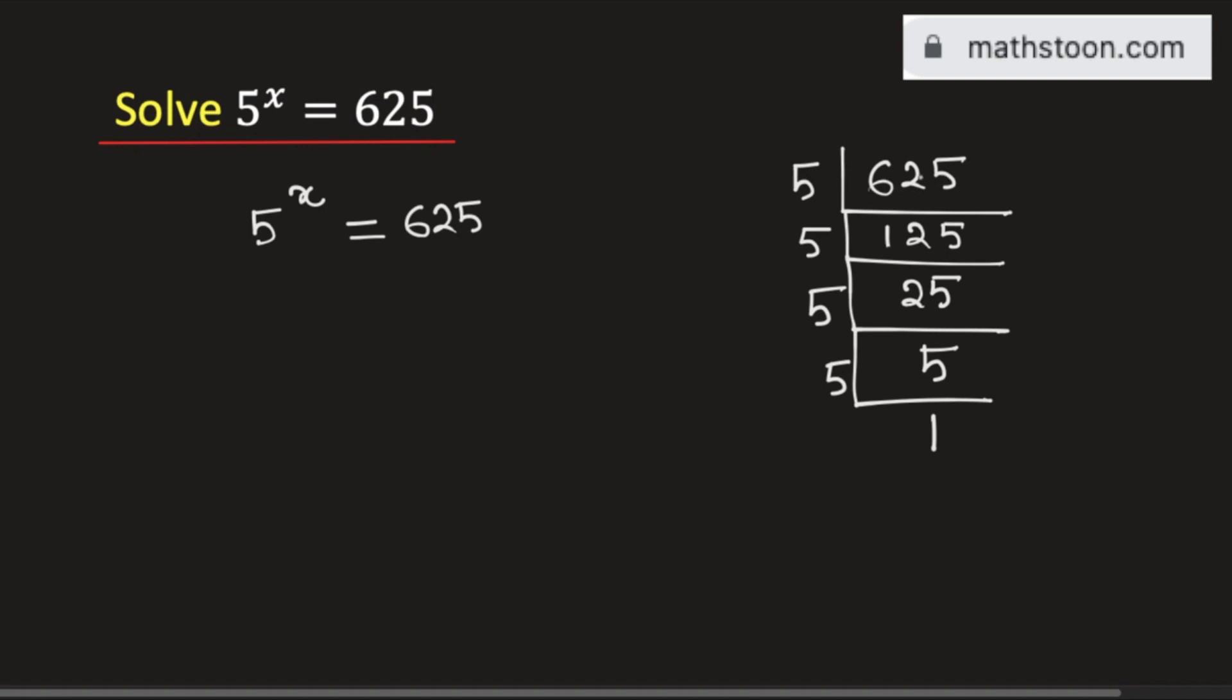Therefore, 625 is the product of 4 copies of 5. That is, 625 can be written as 5 to the power 4.